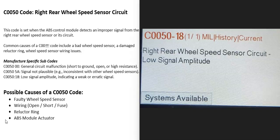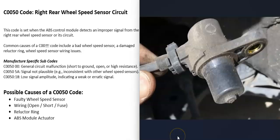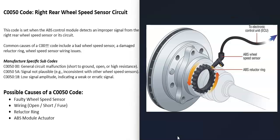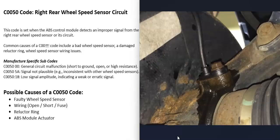Today I'm talking about a C0050 code — what it is and how you could go about fixing it. A C0050 code is a right rear wheel speed sensor circuit. Each wheel on the vehicle has a wheel speed sensor that reports back to the computer how fast that wheel is moving. The computer uses this information for different things, for example the anti-lock brake system. When you get a C0050 code, the computer is seeing a problem with the right rear wheel speed sensor.